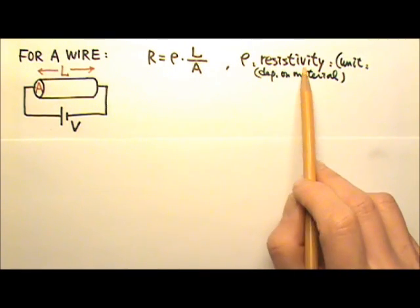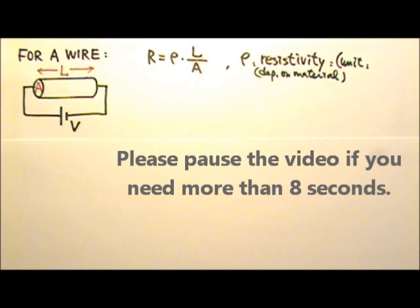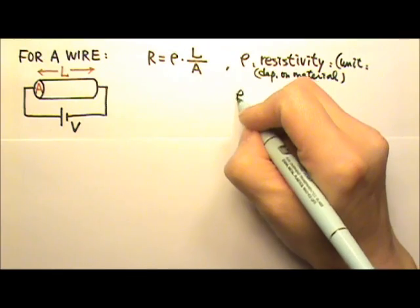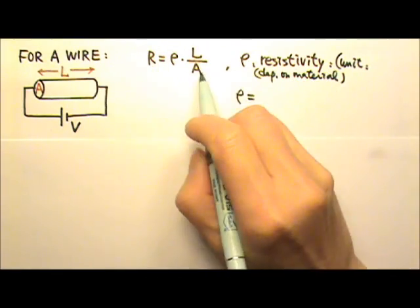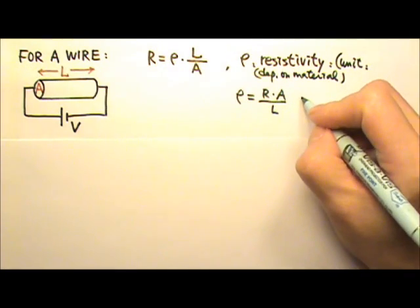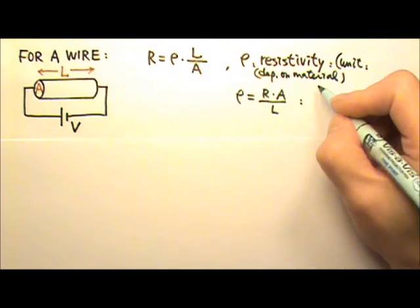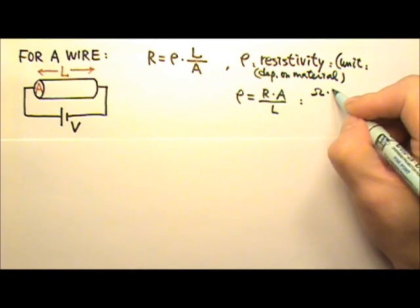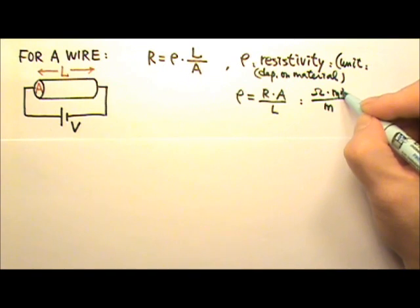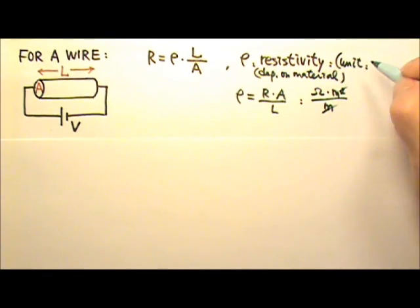What is the unit for resistivity? If I solve for resistivity, rho equals R times A divided by L, which means unit-wise it's ohms times area in meters squared divided by the length in meters. So one of the meters cancels, and the unit for resistivity is ohm·meters.